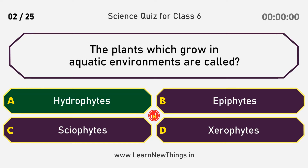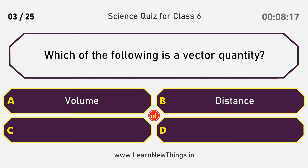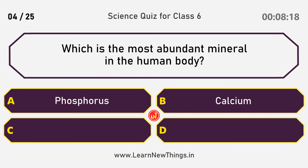Hydrophytes. Which of the following is a vector quantity? Answer: Velocity. Which is the most abundant mineral in the human body?